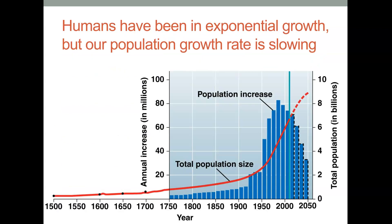I'm going to pause the video here and end the first part. We basically used the first part to talk about how we study populations of animals in the environment. The second part of this talk is going to be how we study ourselves — how our own human population is growing and what factors may influence the growth of our own population.